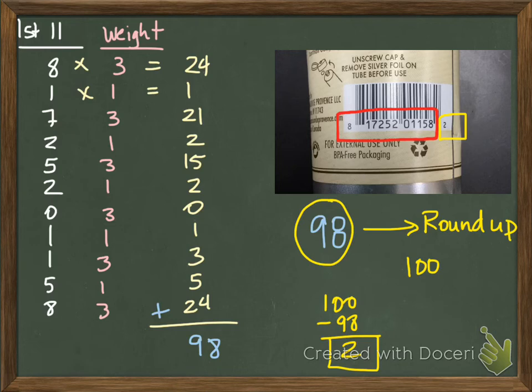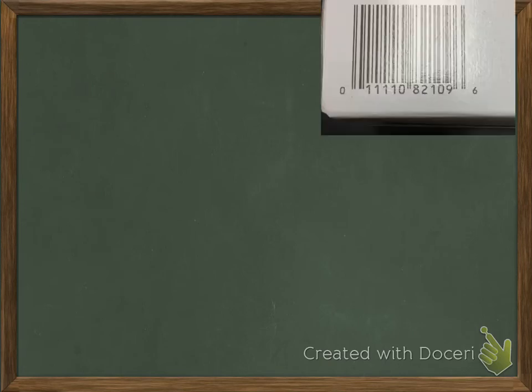Let's try it again with the Kleenex box. I'll write down all the numbers except the last digit — the 6 is my check digit, and that's what I'm going to use to verify whether this barcode is valid.